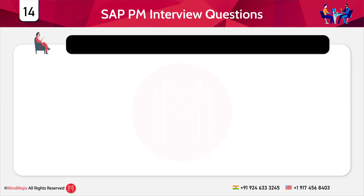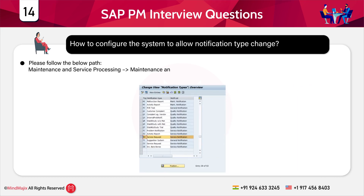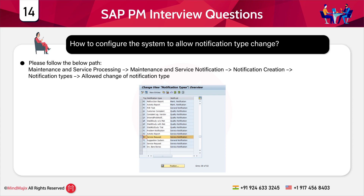How do you configure the system to allow notification type change? In SPRO you can define the allowed change of notification type. The path is: Maintenance and Service Processing > Maintenance and Service Notification > Notification Creation > Notification Types > Allowed Change of Notification Type.